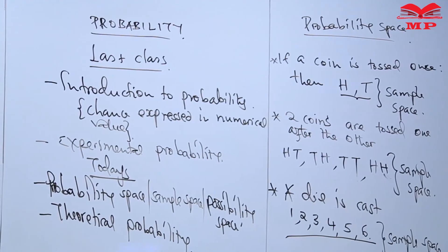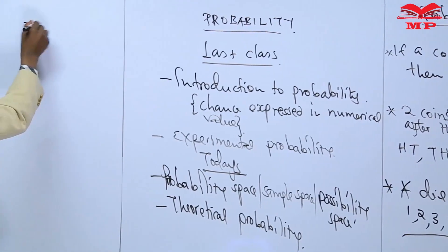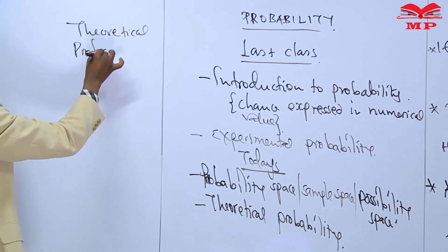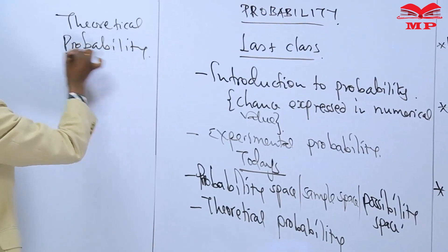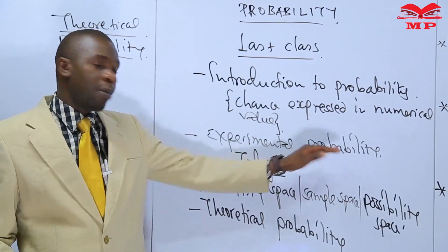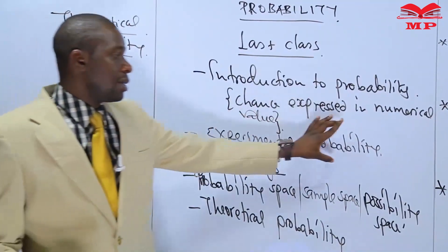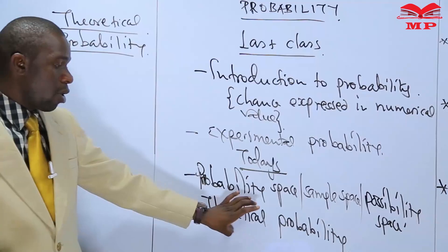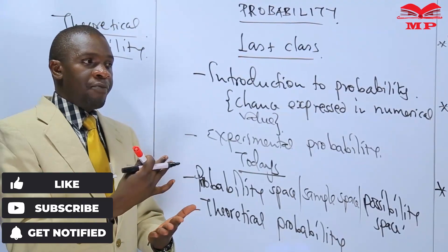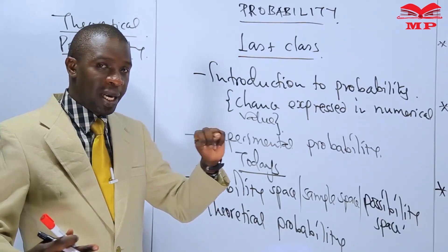We are moving straight away to look at what we are calling theoretical probability. We have looked at experimental probability, and now we are looking at theoretical probability. The basic differentiation of probability gives us two types: experimental probability or theoretical probability.